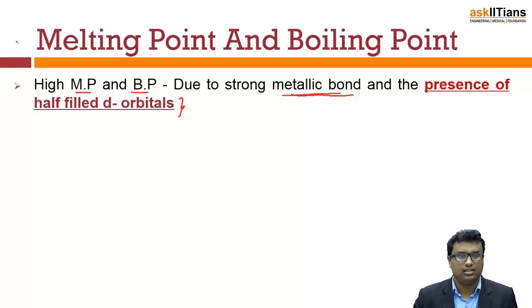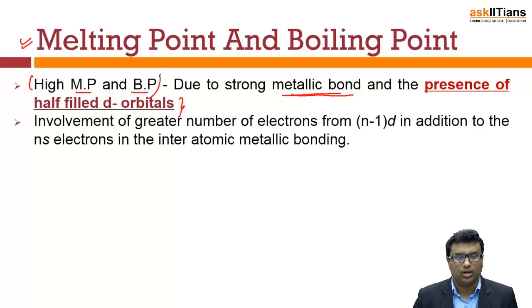The transition elements have higher melting and boiling point. The next important reason is the involvement of a greater number of electrons from (n-1)d in addition to the ns electrons in the inter-atomic metallic bonding.